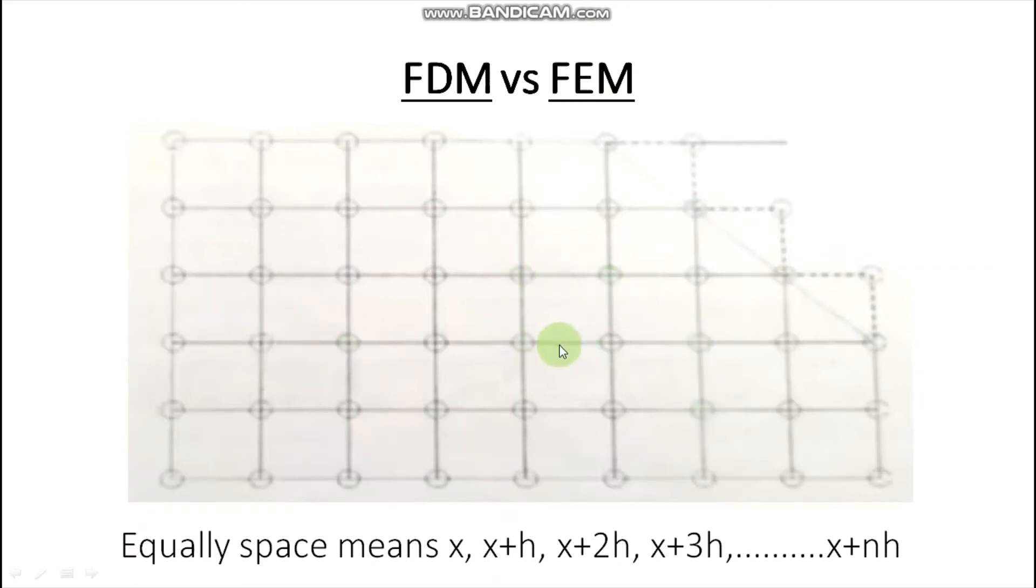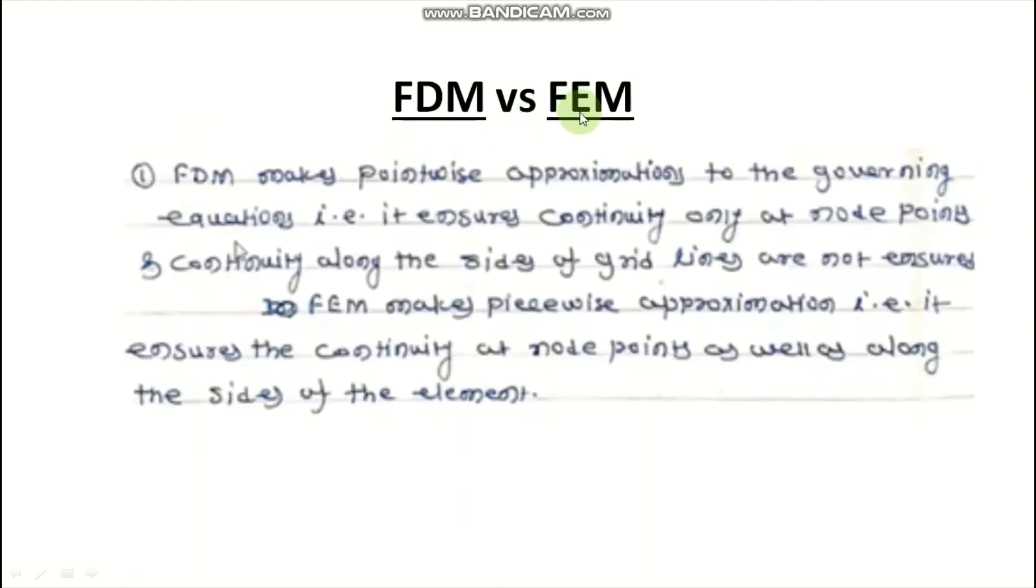If you look at this structure, there is a straight line. So means in FDM, from this node to this node, this node to this node, and directly to this node. Means whatever the points are there, there we have to apply approximating function. So this way FDM versus FEM. So FDM makes point-wise approximation to the governing equation. That is, it ensures continuity only at node points, and continuity along the side of the grid lines is not ensured. But in FEM, it makes piece-wise approximation. That is, it ensures the continuity at node points as well as along the side of the element.